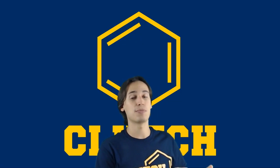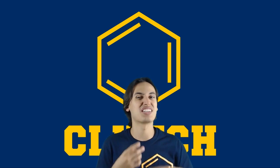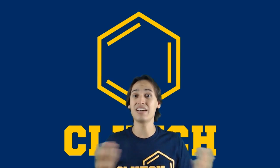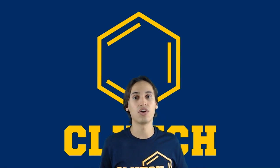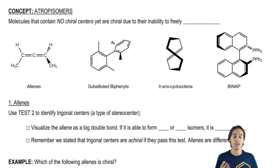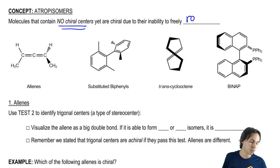Hey everyone. Now that I know in general terms how to predict what types of stereoisomers I'm going to get based on the number of chiral centers, now I'm going to start teaching you some of those exceptions to the rules. The first of those exceptions is a chiral compound that doesn't have any chiral centers at all. These are called atropisomers — unusual compounds that contain no chiral centers, yet they actually are chiral due to their inability to freely rotate.